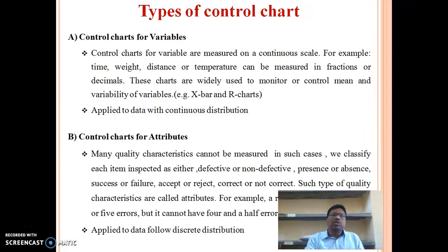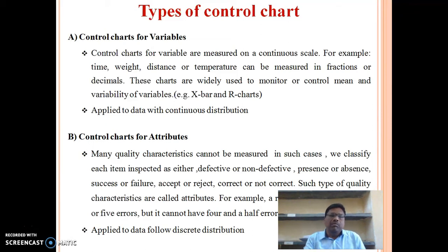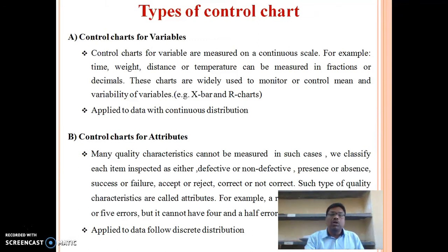Types of control charts: Control charts for variables — such as x-bar chart and R chart — are used to control or monitor the mean and variability of variables, applied to data with continuous distributions. In control charts for attributes, we classify each item inspected as either defective or non-defective, presence or absence, success or failure, accept or reject, correct or not correct. Such quality characteristics are called attributes. For example, a report can have four or five errors but cannot have four and a half errors — here applied to data following discrete distributions.